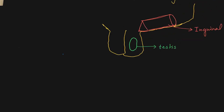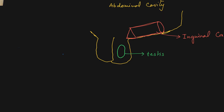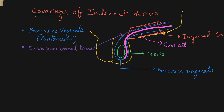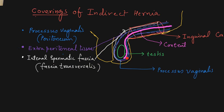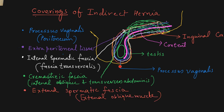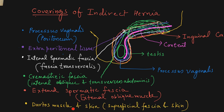The coverings of indirect inguinal hernia: the processus vaginalis along with the content passes through the deep inguinal ring and through the superficial inguinal ring. So the first covering is the processus vaginalis of peritoneum. Outside the peritoneum there is extraperitoneal tissue; still outside is the internal spermatic fascia, which is the fascia transversalis; outside that is the cremasteric fascia, a modification of the internal oblique and transverse abdominis muscle. After passing through the superficial inguinal ring, another covering is the external spermatic fascia from external oblique. In the scrotum we get the dartos muscle from the superficial fascia, and lastly the skin.